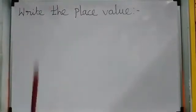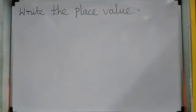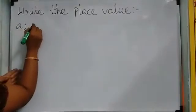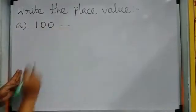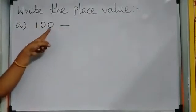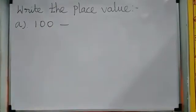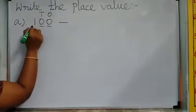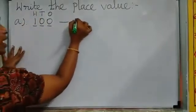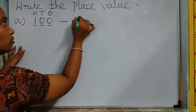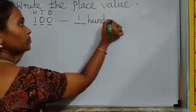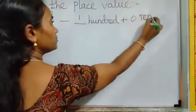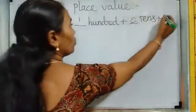Next, write the place values. You already know 2-digit place values: 1's place and 10's place. Now we will see 3 digits. This number has 3 digits: 1, 2, 3. How to write the place value? The first place is 1's, the second place is 10's, and next is 100's. So: 1 × 100, plus 0 × 10's, plus 0 × 1's.